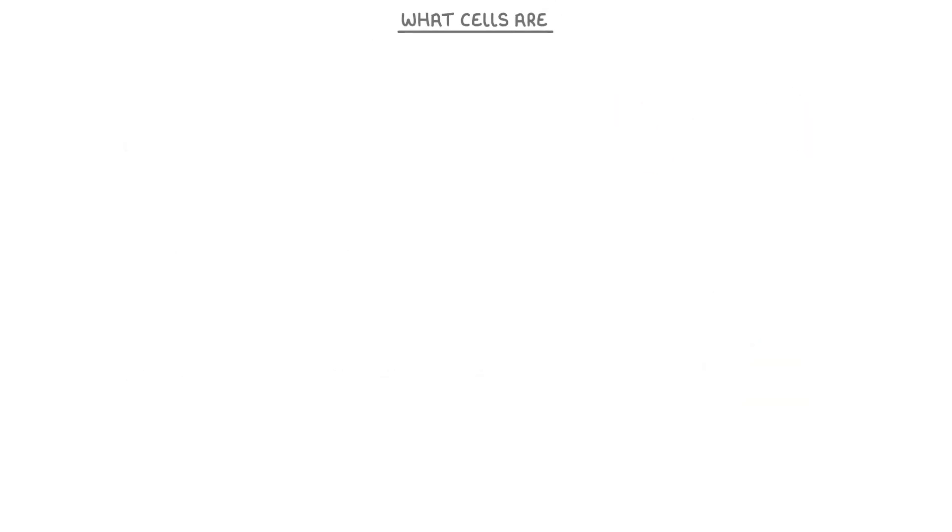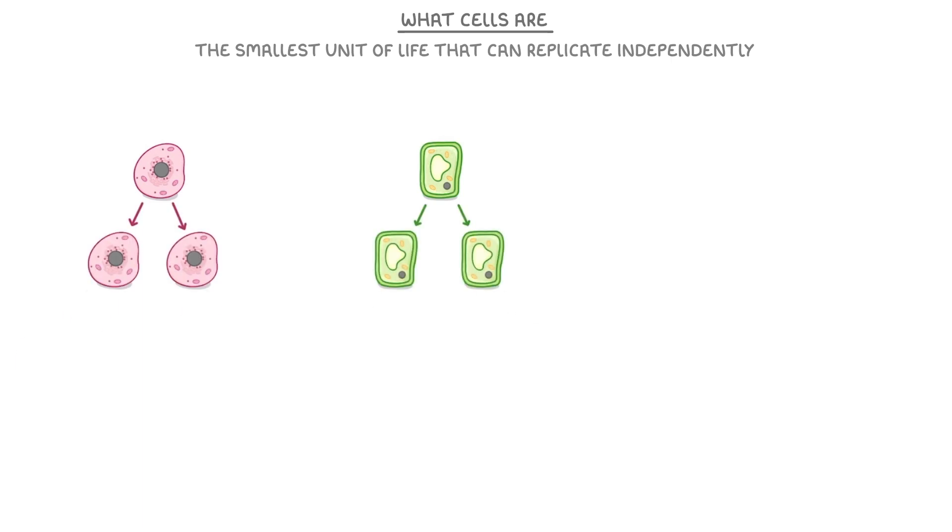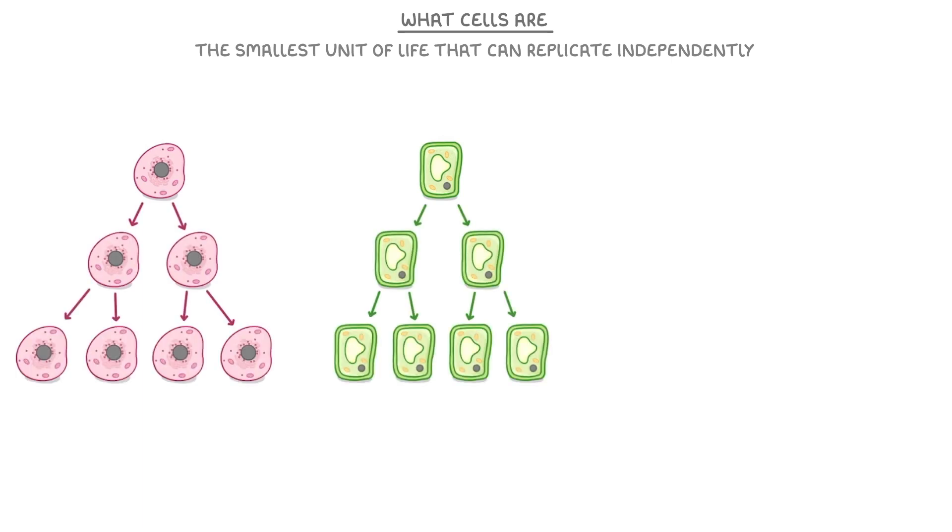Let's start with what cells are. You can think of cells as the basic building blocks of life. What we mean by this is that they're the smallest unit of life that can replicate independently. If we took an animal or a plant cell, they could divide into two cells, then into four cells, and so on. It's these cells that make up an organism.